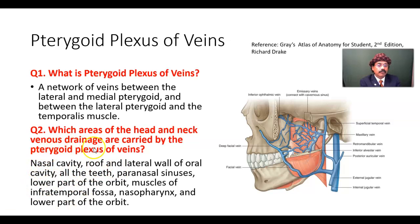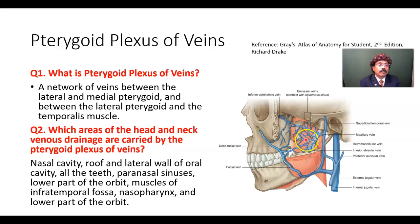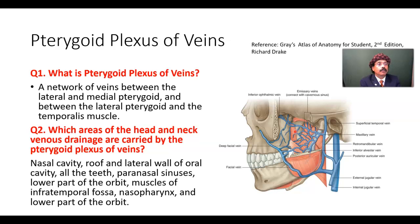Which areas of the head and neck venous drainage are carried by the pterygoid plexus of veins? This pterygoid plexus of veins is the plexus which drains venous blood from all the teeth, from the nasal cavity, from the roof and lateral wall of the oral cavity, from the paranasal sinuses, and also from the orbit, especially the lower part of the orbit.